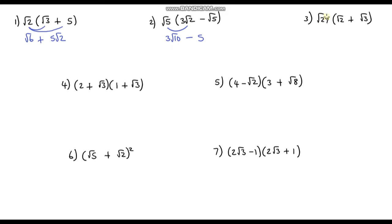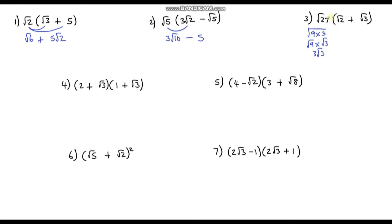Question 3: we've got √27 times (√2 + √3). We could multiply to get √54, but that's not fully simplified. Instead, let's first simplify √27. The square root of 27 is the same as √(9×3), which equals √9 times √3. Since √9 is 3, this gives us 3√3. So √27 = 3√3, and I'll rewrite the question as 3√3(√2 + √3).